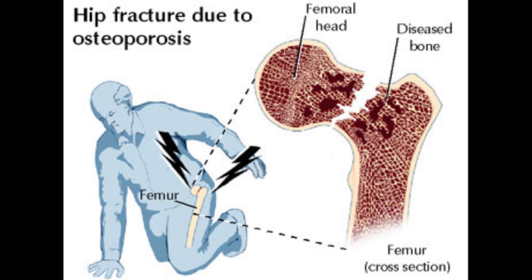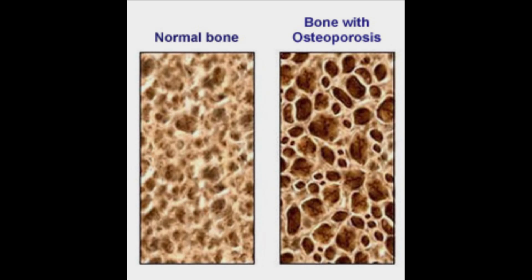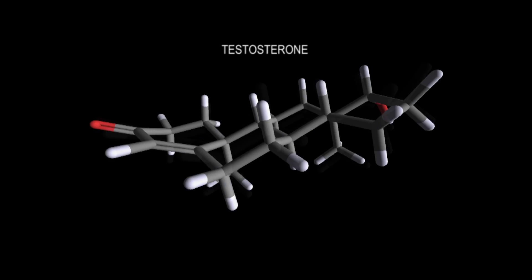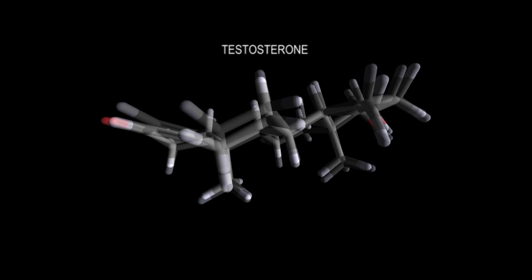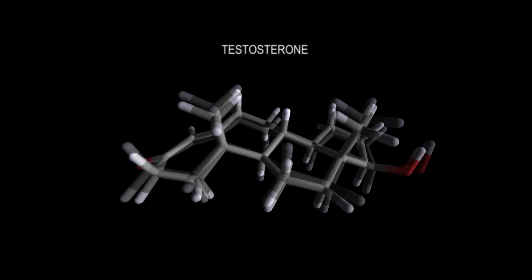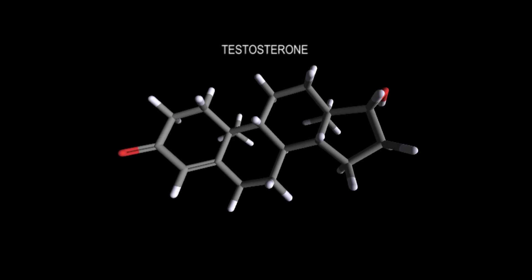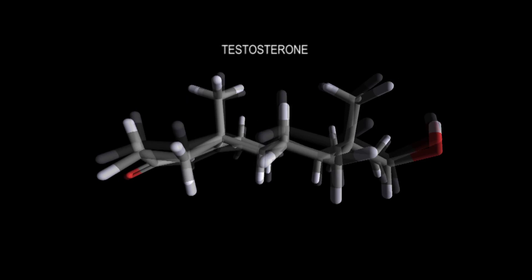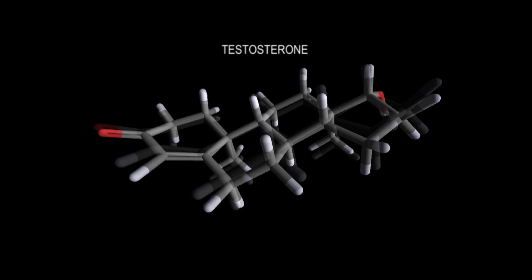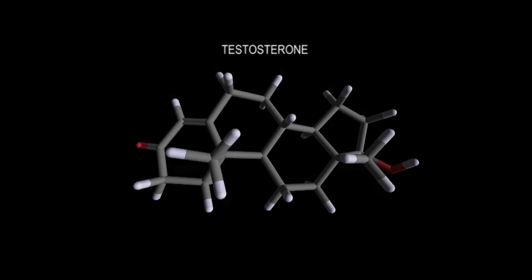On average, an adult human male body produces about 10 times more testosterone than an adult human female body, but females are, from a behavioral perspective rather than an anatomical or biological perspective, more sensitive to the hormone. However, the overall ranges for male and female are very wide, such that the ranges actually overlap at the low end and high end respectively.